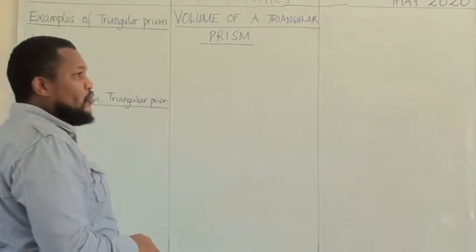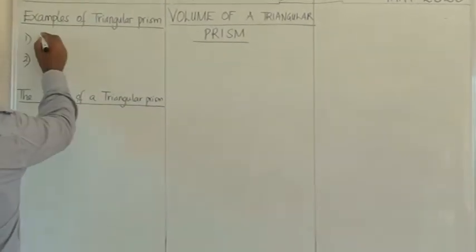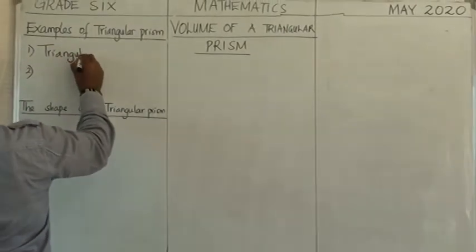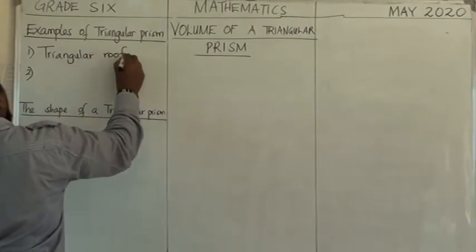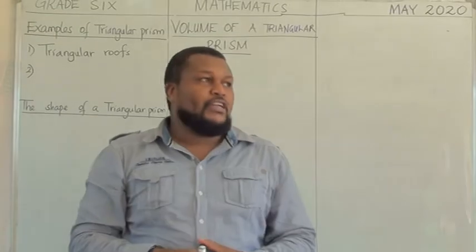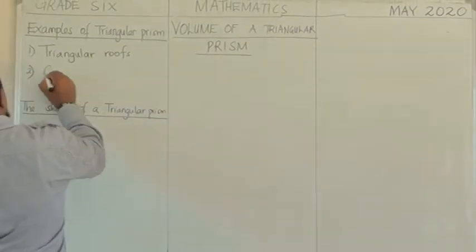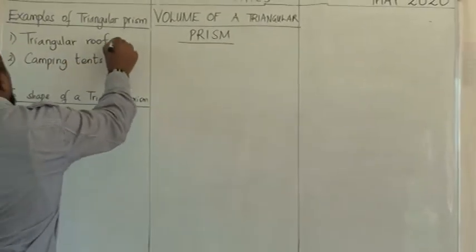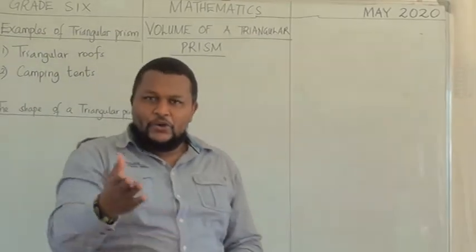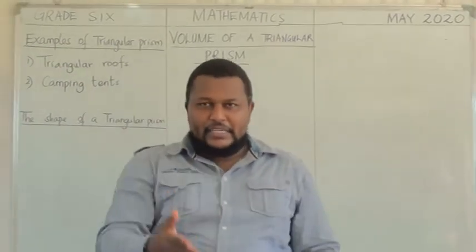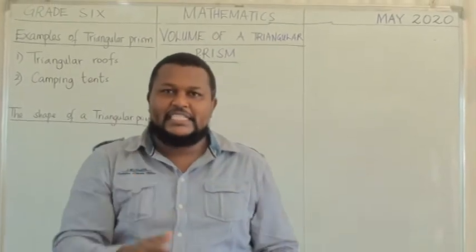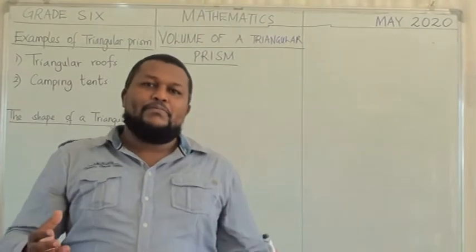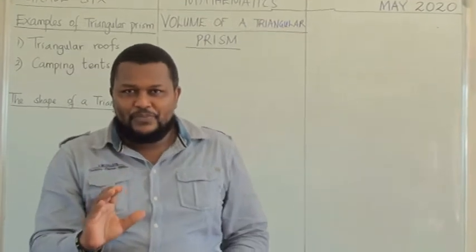The first one is triangular roofs - we have different types of roofs but we would like you to consider triangular roofs. Triangular roofs are in the shape of triangular prisms. Then we have camping tents. If you have ever had an opportunity to go climbing mountains or go for picnics, I know you have used the triangular tents, the camping tents. There are more shapes - most of them are in that shape.